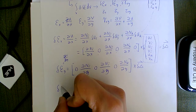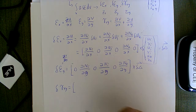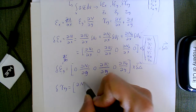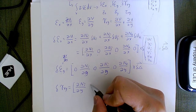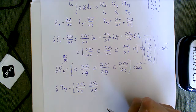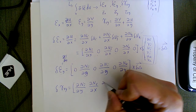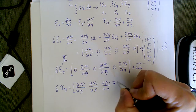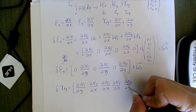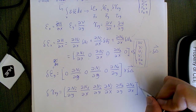For the shear strain γxy, terms going to u involve differentiation with respect to y, and terms going to v involve differentiation with respect to x. The third row of the B-matrix is: [∂Ni/∂y, ∂Ni/∂x, ∂Nj/∂y, ∂Nj/∂x, ∂Nk/∂y, ∂Nk/∂x] times the displacement vector δ — six terms in total.